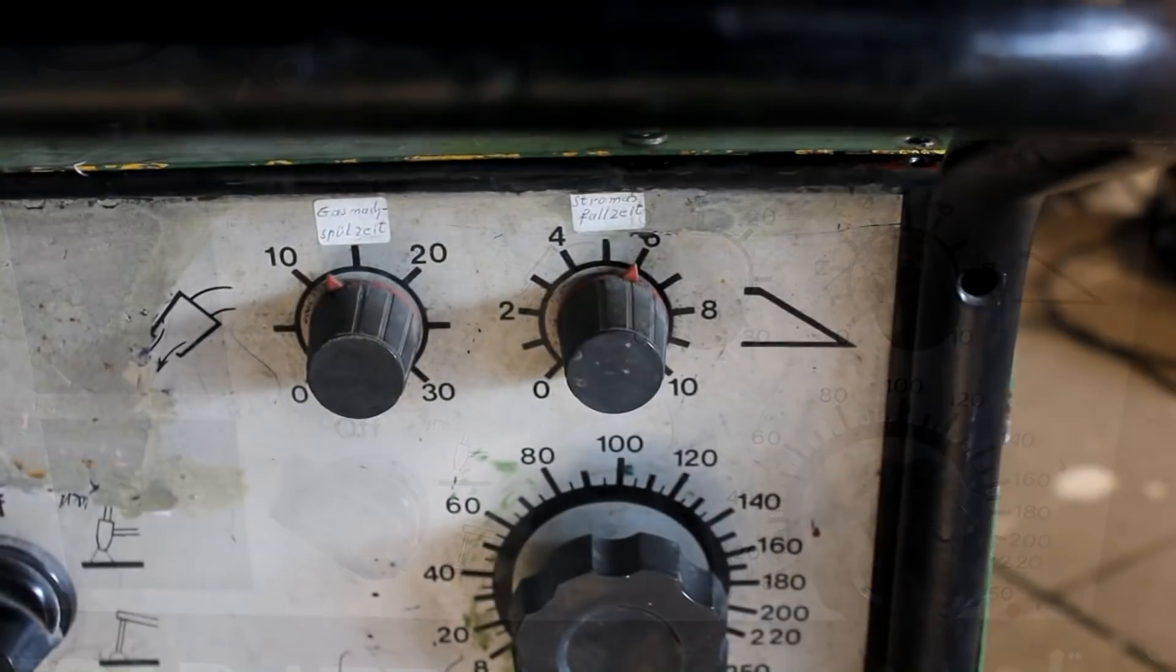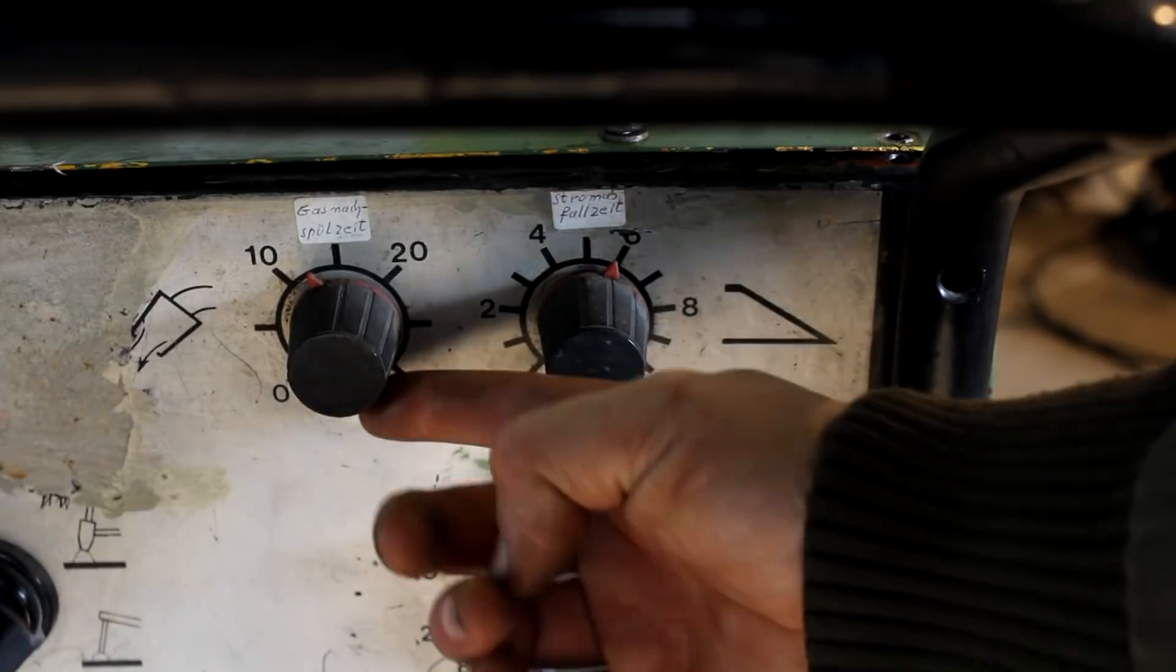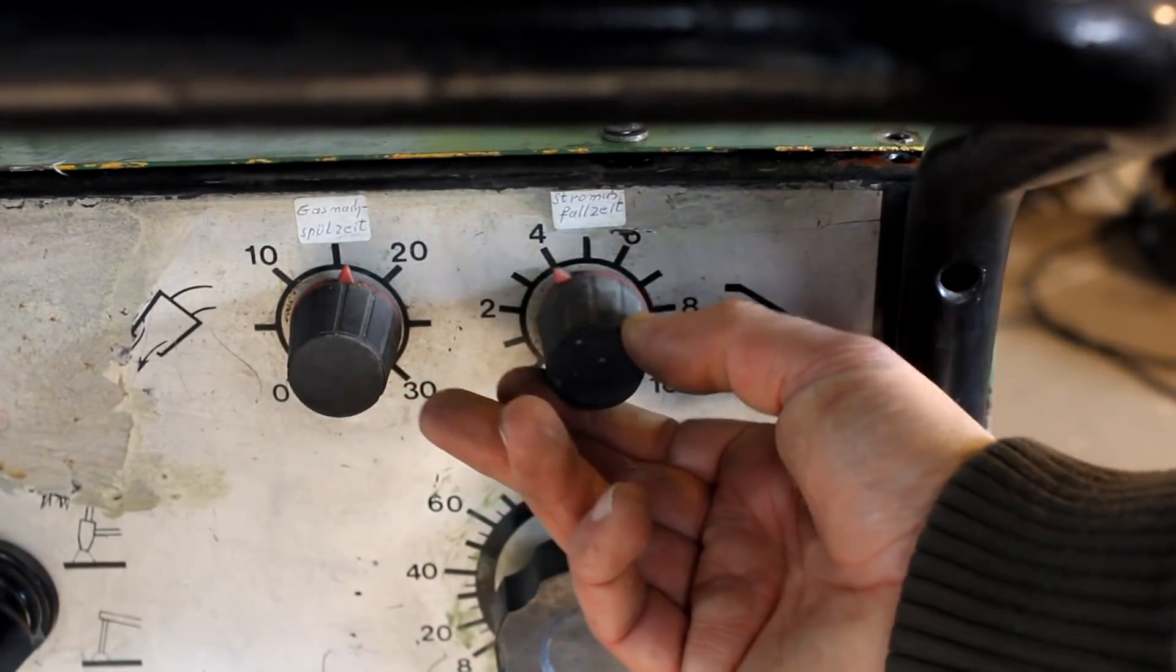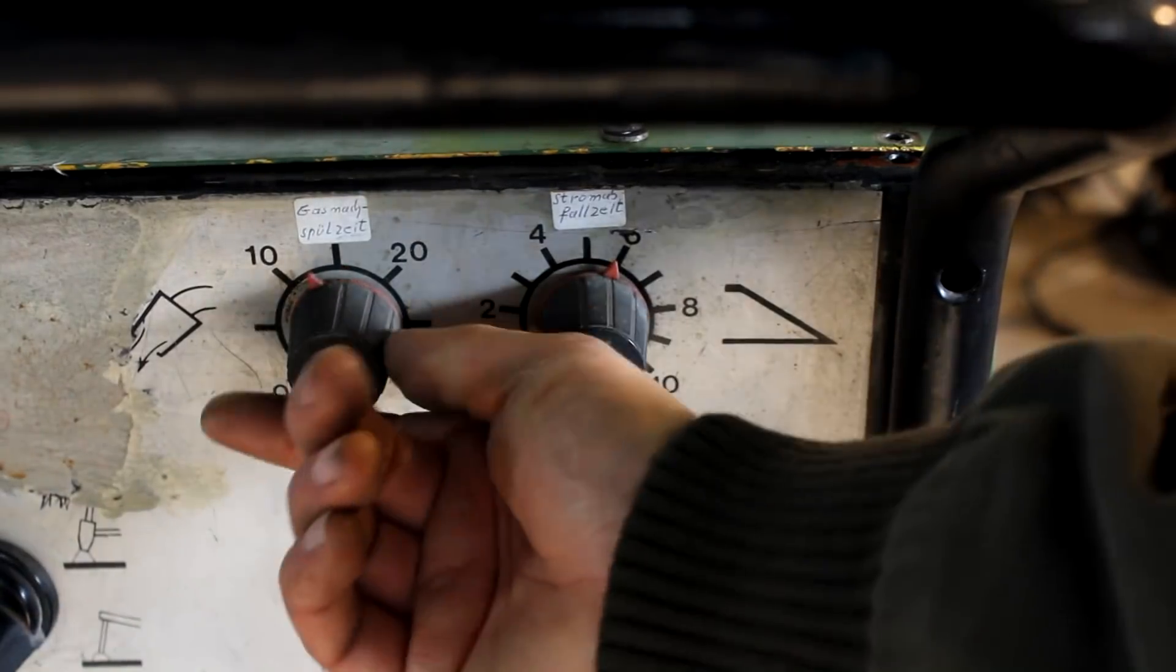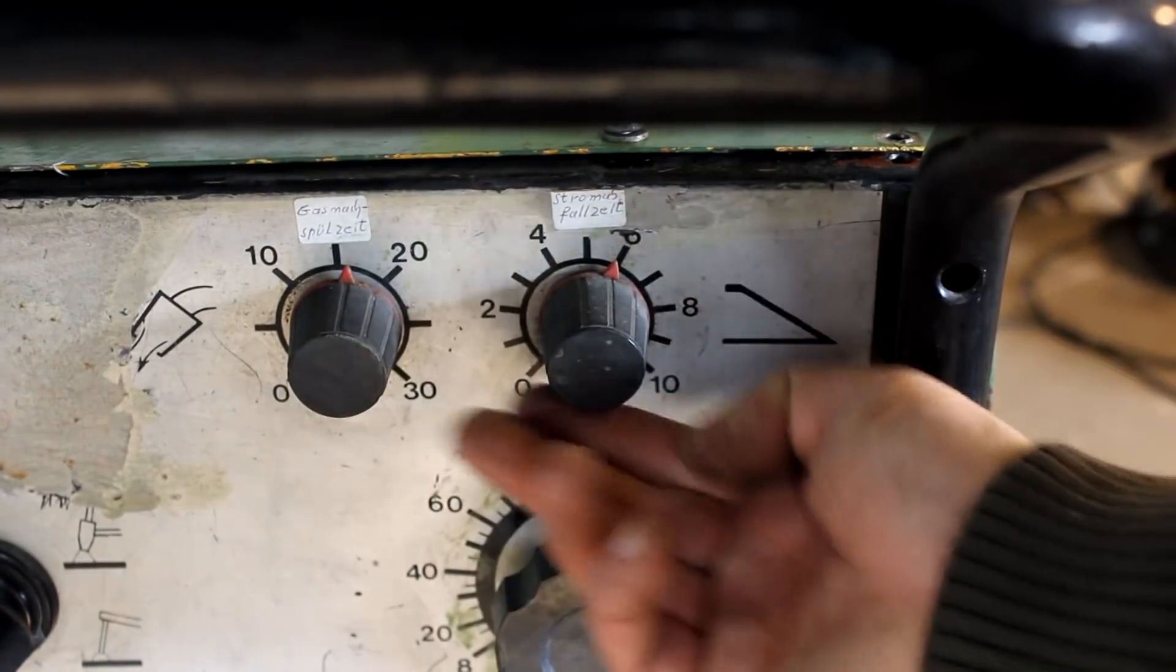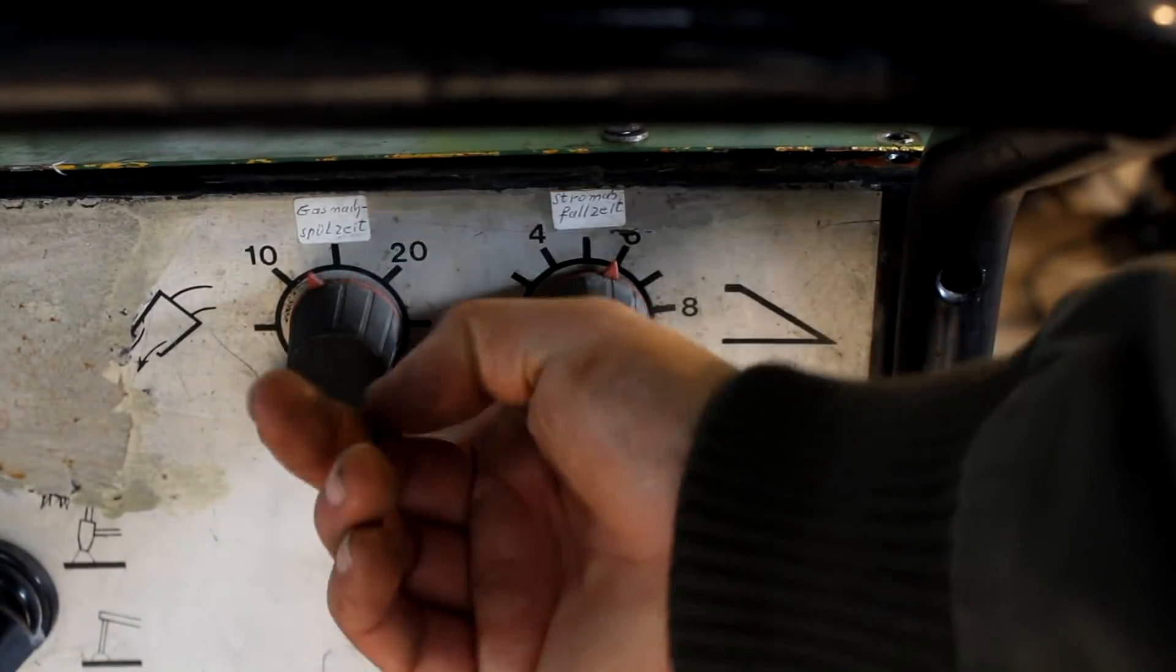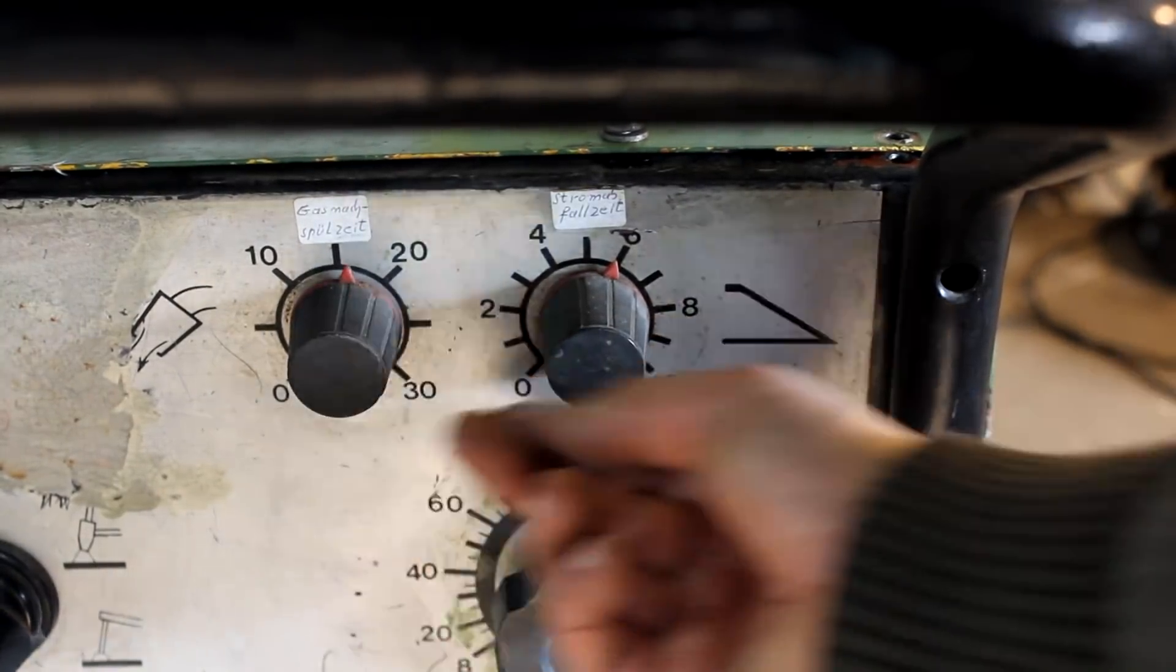And we have two more knobs here. And the left one says Gas Nachspülzeit. That means gas post flow time, the amount of time that the gas will flow after the welding arc is actually shut down. And Stromabfallzeit. And that means downslope time.